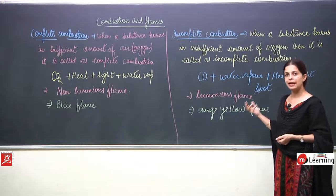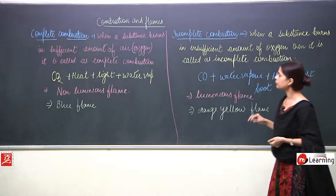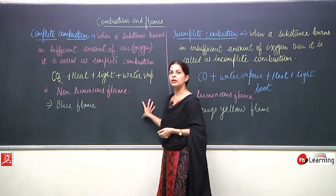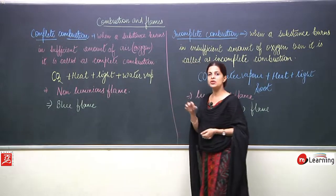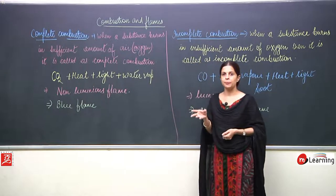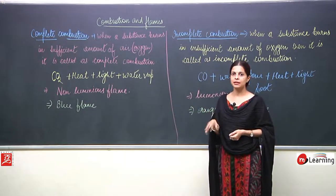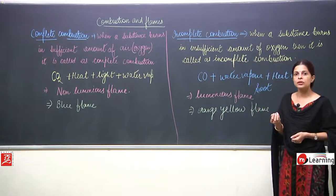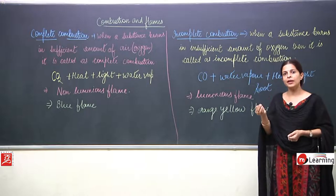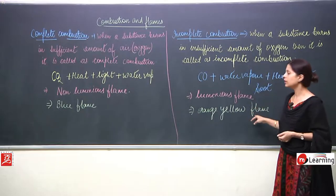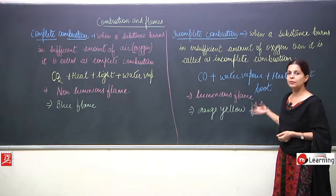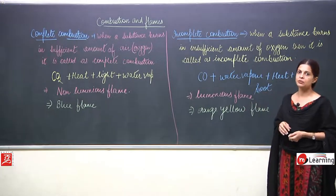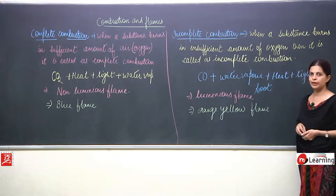The flame in complete combustion is blue. Why? Because there is nothing which is unburned, so a yellowish flame does not occur. In incomplete combustion, the unburned substances glow and the flame is of orange-yellow color, because they are glowing — this kind of flame is known as a luminous flame.